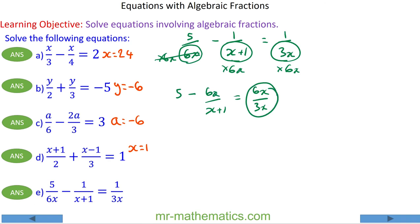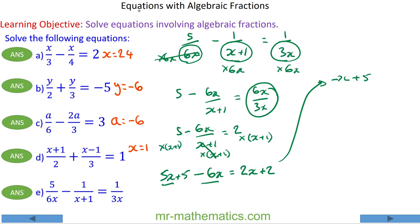So here I'm left with 5 minus 6x over x plus 1 equals 6x over 3x, and these will cancel to make 2. 5 minus 6x over x plus 1 will equal 2. And now I multiply every term by x plus 1, so I have 5x plus 5 minus, and these will cancel, so 6x will equal 2x plus 2.